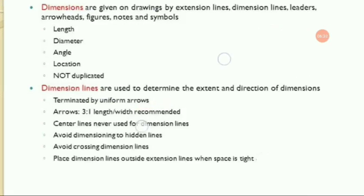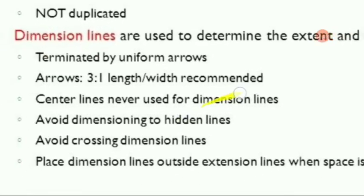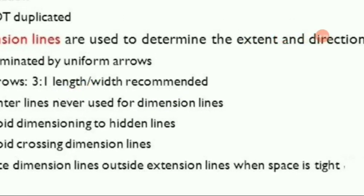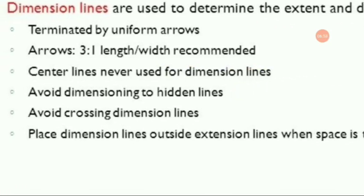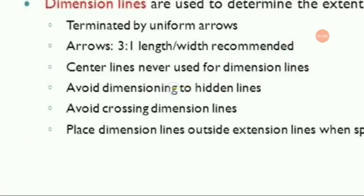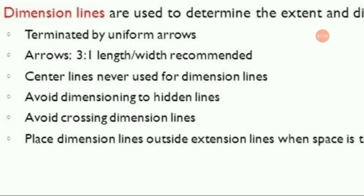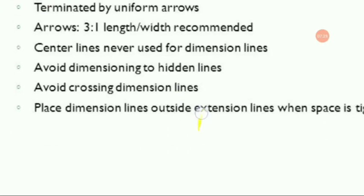Dimension lines are terminated by uniform arrows. Arrows should have a ratio of 3 to 1 for length to width — this is recommended for drawing arrows used in dimensioning. Center lines should never be used as dimension lines; center lines are the lines with dashes and a point in between two dashes.